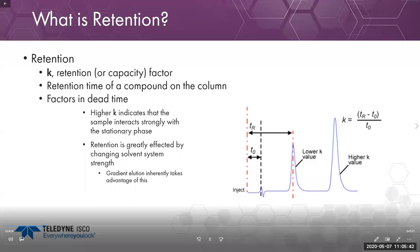Retention is greatly affected by changing the solvent system strength. With gradient elution going from 0 to 100%, we increase the strength of percent B, which modifies the retention to a lower K value — compounds held at the top of the column start to travel as solvent strength increases.